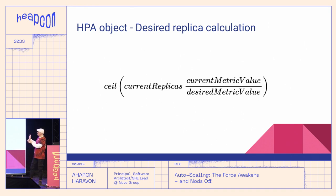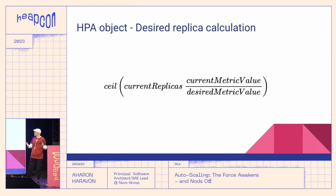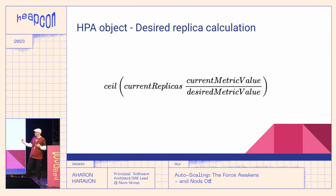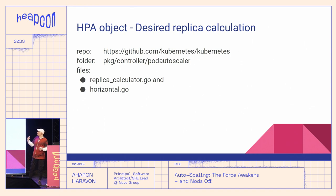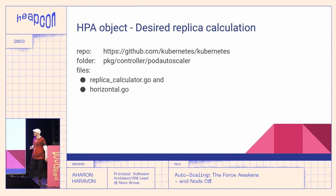In general, the HPA controller calculates the desired number of replicas as the smallest integer not smaller than the multiplication of the current number of replicas and the ratio of the current metric value over the desired metric value — also called the threshold or target value. The details differ depending on the metric type and target type combinations. If you need to dive deeper into how the calculation works, you should check out the particular files in the Kubernetes repository that encapsulate this logic.